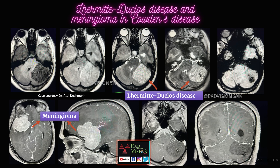Next, this is also a classical case where you can see a meningioma along the greater wing of the sphenoid, and also a hyperintense lesion in the cerebellum showing typical corduroy appearance, also called laminated or tigroid striated appearance, which is classical for Lhermitte-Duclos disease, or dysplastic cerebellar gangliocytoma. Whenever you see Lhermitte-Duclos disease associated with meningiomas and other multiple malignancies, definitely suspect Cowden syndrome. So this is a rare case of Lhermitte-Duclos disease and meningioma in Cowden's syndrome.